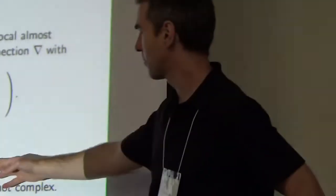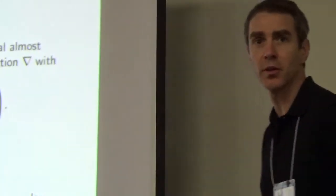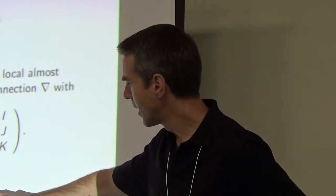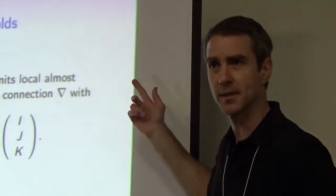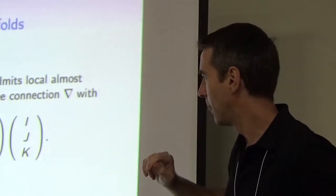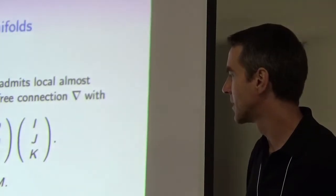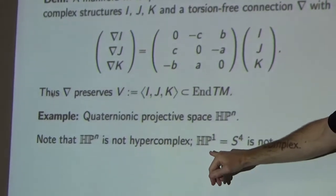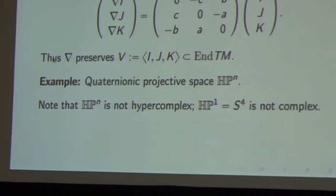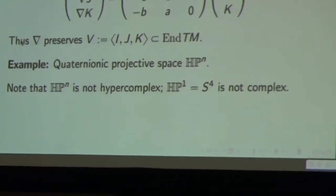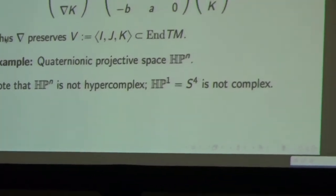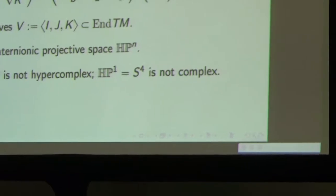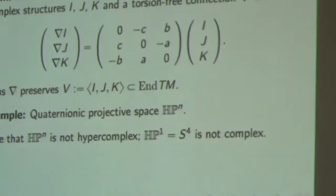An interesting example of this is quaternion projective space: you take n+1 dimensional quaternions and quotient out by scales. Interestingly, this is not hypercomplex in the previous definition, but it does give an example of one of these quaternionic manifolds. You can see it's not hypercomplex because the lowest-dimensional example, HP^1, is just a four-dimensional sphere. It's known that only S^2 and S^6 have almost complex structures, and certainly S^4 doesn't have a complex structure, so it can't be hypercomplex.